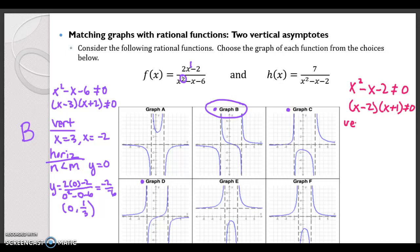So my vertical asymptotes are at x equals 2 and x equals negative 1. So which graphs have vertical asymptotes at x equals 2 and x equals negative 1? So A, E, and F.